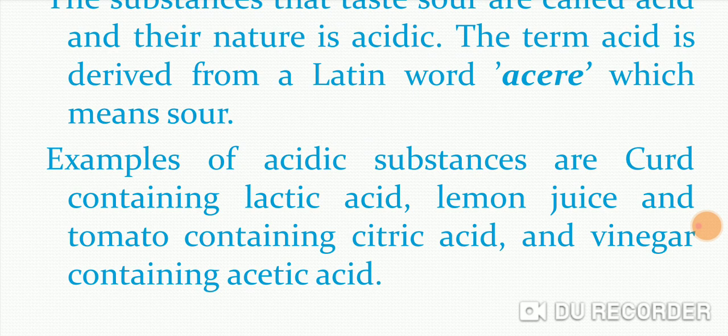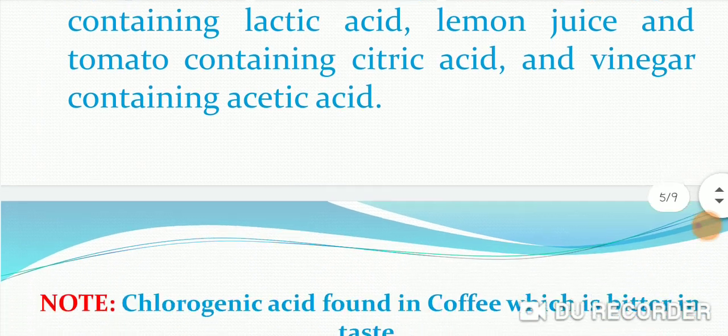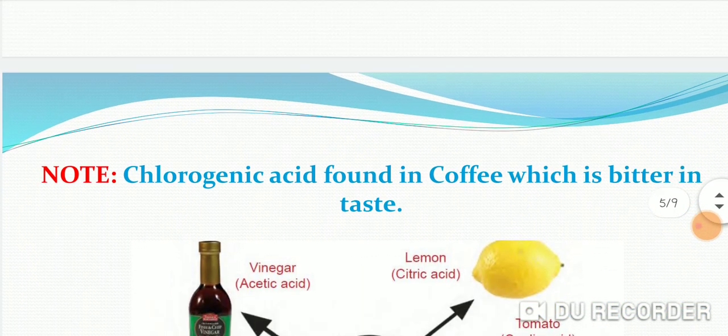These are some types of substances which contain different types of acids. These all acids are known as weak acids. Strong acids also exist like hydrochloric acid and sulfuric acid. These are also examples of acids. You can mention them also, no problem at all.